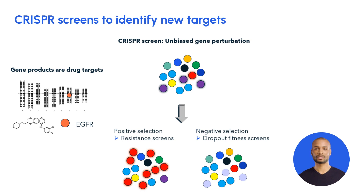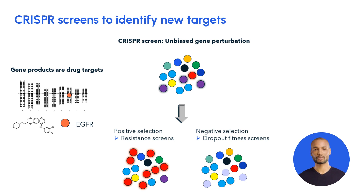Positive screens allow to nominate cells that acquire resistance to a drug — cells in red. On the other hand, negative fitness screens look for essential genes whose perturbation leads to a dropout of cells, those in purple.